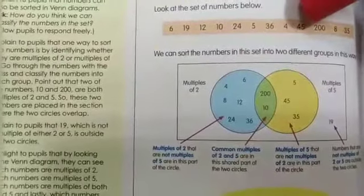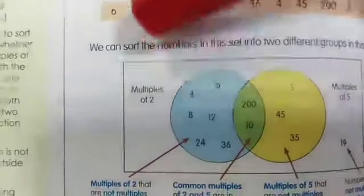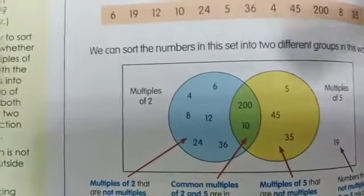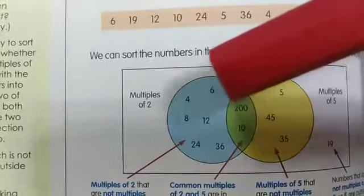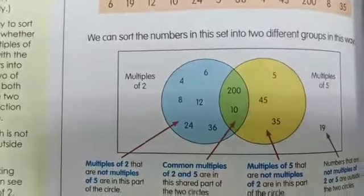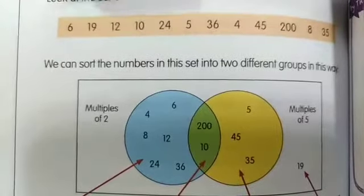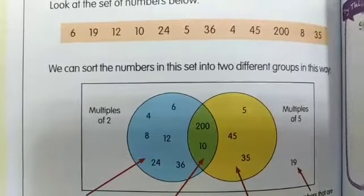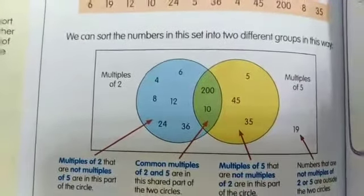The number 200 and the number 10 are common between both, multiple of 2 and multiple of 5. We can count by 2 to get 10 as: 2, 4, 6, 8, 10. We can also count by 5 to get 10 as: 5, 10. Also, 200 is a common multiple of both 2 and 5. Now, the number 19 was not put in any of the circles, because it's not a multiple of 2, not a multiple of 5, and not a common multiple of both, so number 19 has to be out of both circles.